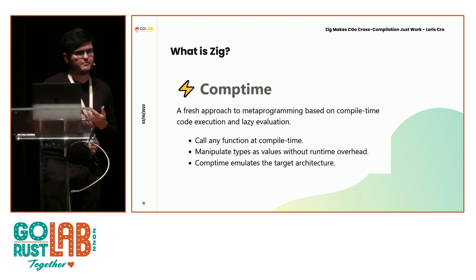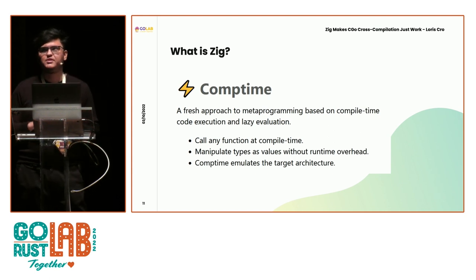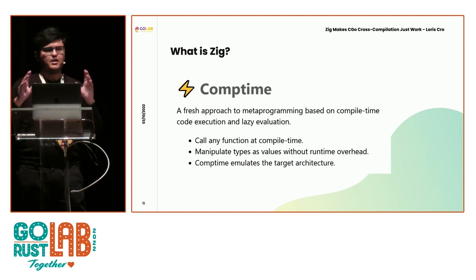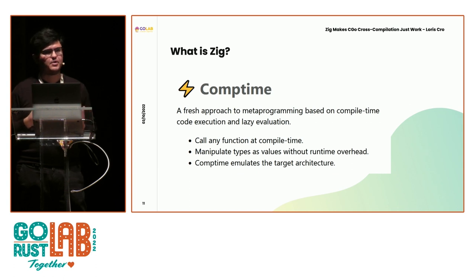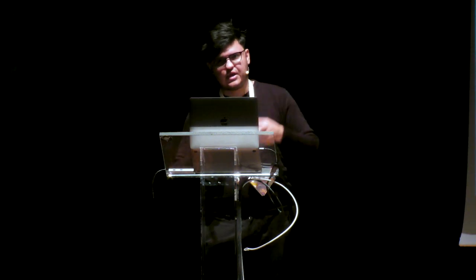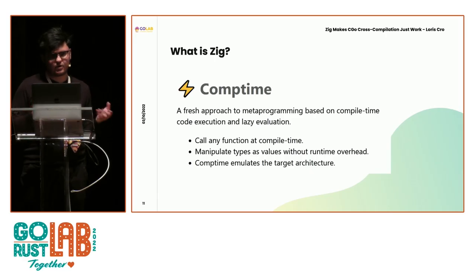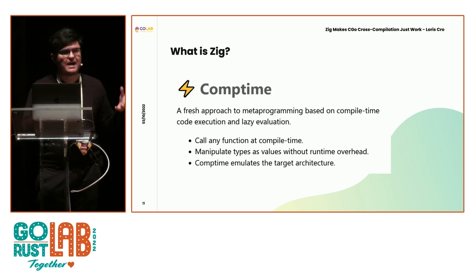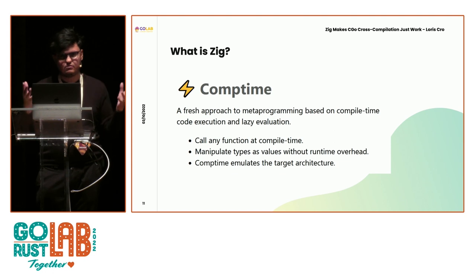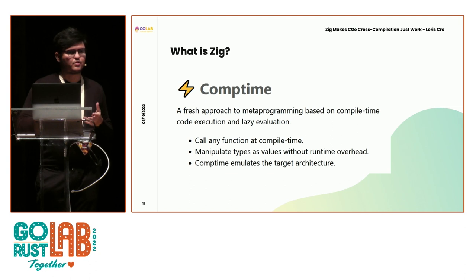Zig doesn't have macros but it does have metaprogramming with 'comptime,' which is kind of like C++ constexpr except on steroids. In Go you have runtime metaprogramming — reflection. In Zig there's no runtime type information, so you can't do runtime metaprogramming; a Zig executable is kind of like a C executable — types evaporate. But what you can't do at runtime, you can do at compile time. You can run arbitrary code and call functions at compile time. For generics, there's no special syntax — at compile time you pass types as normal values and do reflection on them. Zig's compile-time metaprogramming looks a lot like runtime metaprogramming in Go.